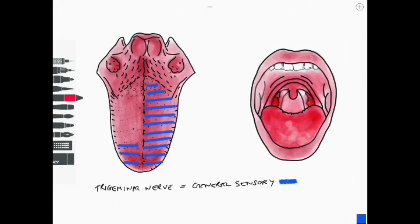Sticking with trigeminal we're now going to move on to the innervation of the tongue. The trigeminal nerve is general sensory to the anterior two thirds of the tongue seen in blue here. It also contributes general sensory innervation to the roof of the oral cavity and the floor of the oral cavity as well not seen in this diagram.